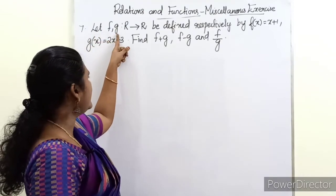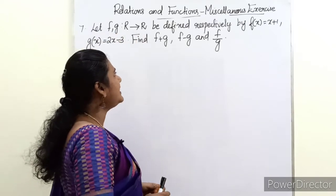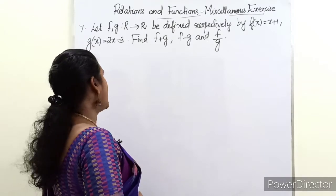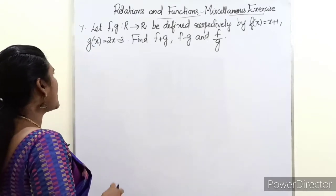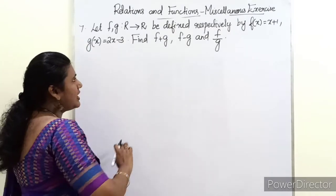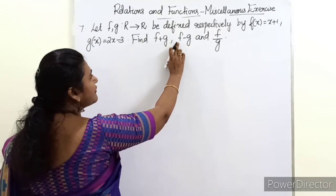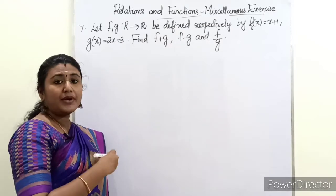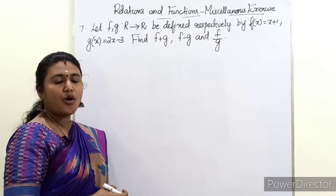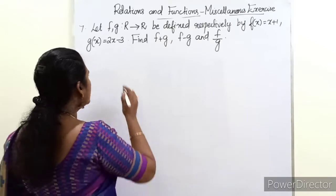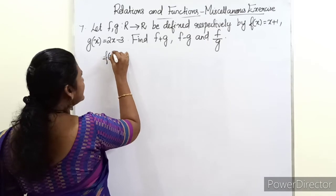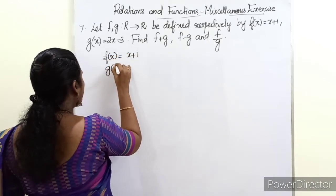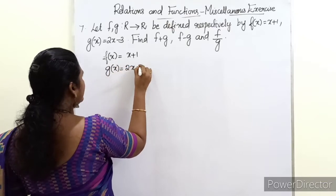Let f and g from R to R be defined respectively by f(x) = x + 1 and g(x) = 2x - 3. Find f + g, f - g, and f by g. We are going to use the concept of operations on real numbers. So f(x) = x + 1 and g(x) = 2x - 3.